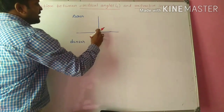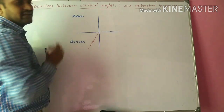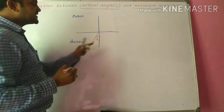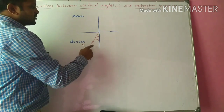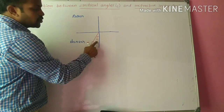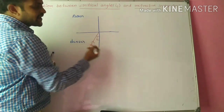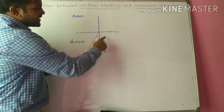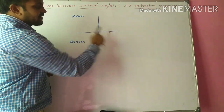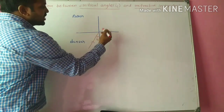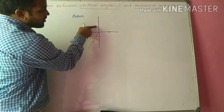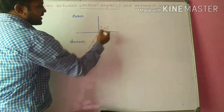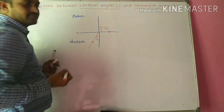We are discussing critical angle because whenever a particular angle of incidence — let us call it ic — is reached, the refracted ray just grazes the surface. The refracted ray grazes the surface means it just travels along the interface. In this case, the angle of refraction r is equal to 90 degrees.